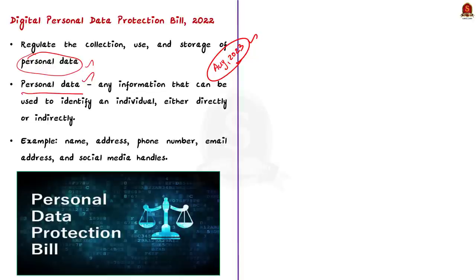According to the bill, personal data is information that can be used to identify an individual either directly or indirectly. This includes information such as name, address, phone number, email address and social media handles.